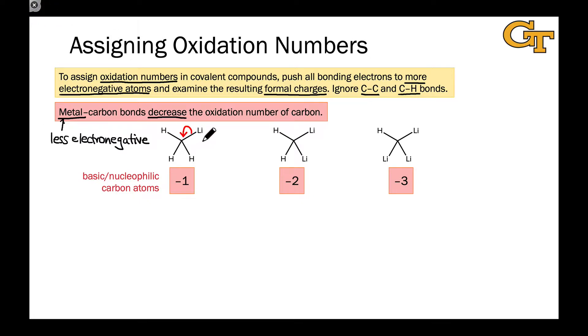In this first case, this would create a hypothetical resonance structure in which the CH3 carbon is now negatively charged and the lithium is positively charged. And that negative one charge on the carbon corresponds to an oxidation number of carbon of negative one.